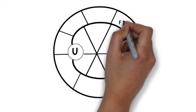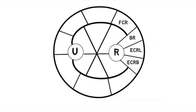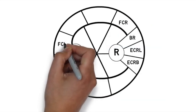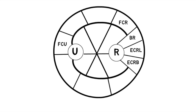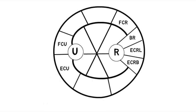As per Henry approach, put FCR next to brachioradialis. If you have FCR, you have FCU, and you have ECU.